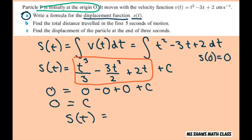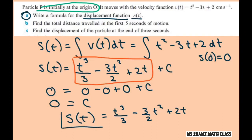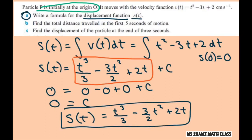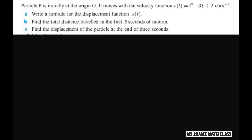So just write that down. The formula for the displacement function is t cubed divided by 3, minus 3 halves t squared, plus 2t. That's the first part. Now the second part is we're going to find the total distance traveled in the first 5 seconds of the motion.